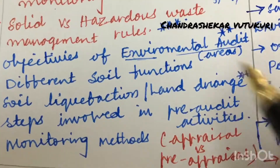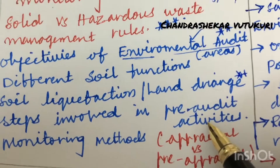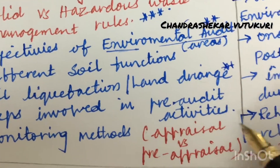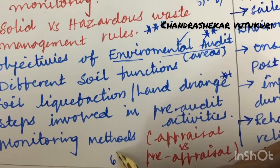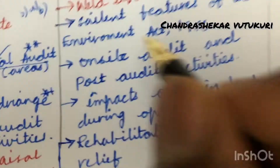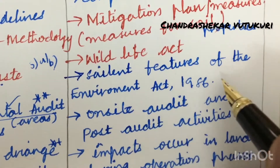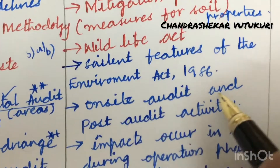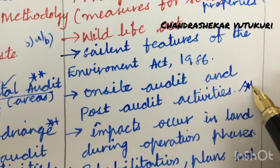The steps involved in pre-audit activities related to environmental audit, monitoring methods related to appraisal versus pre-appraisal — from this part we can expect 6A as well as 6B. The salient features of the Environment Act 1986 and on-site audit and post-audit activities are said to be gunshot questions for this time.